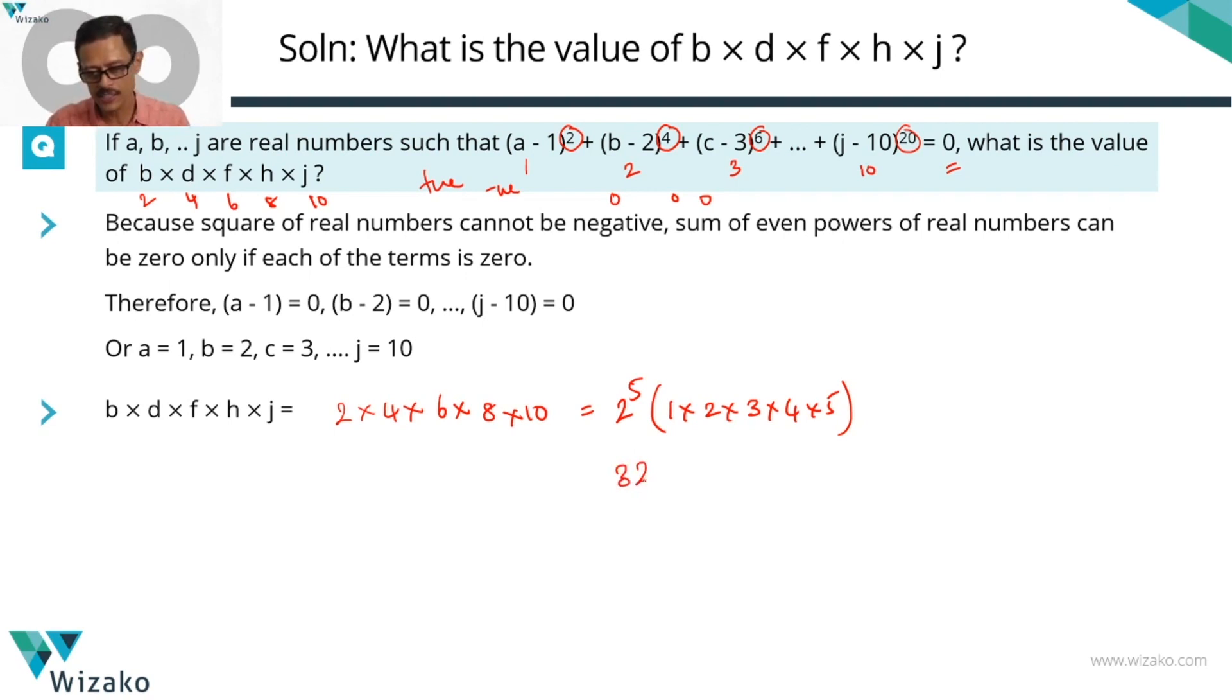2⁵ is 32. 32 × 120 is the answer for this. 32 × 120—32 into 12, 32 into 10 is 320 plus 64, 384—3840 is the answer to this question.